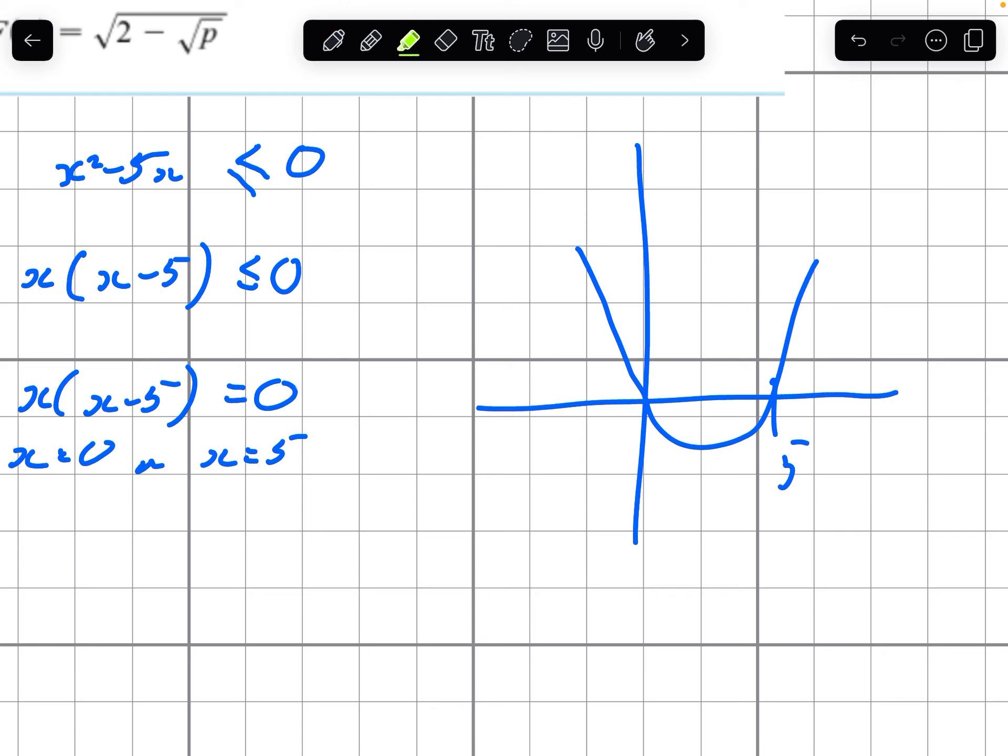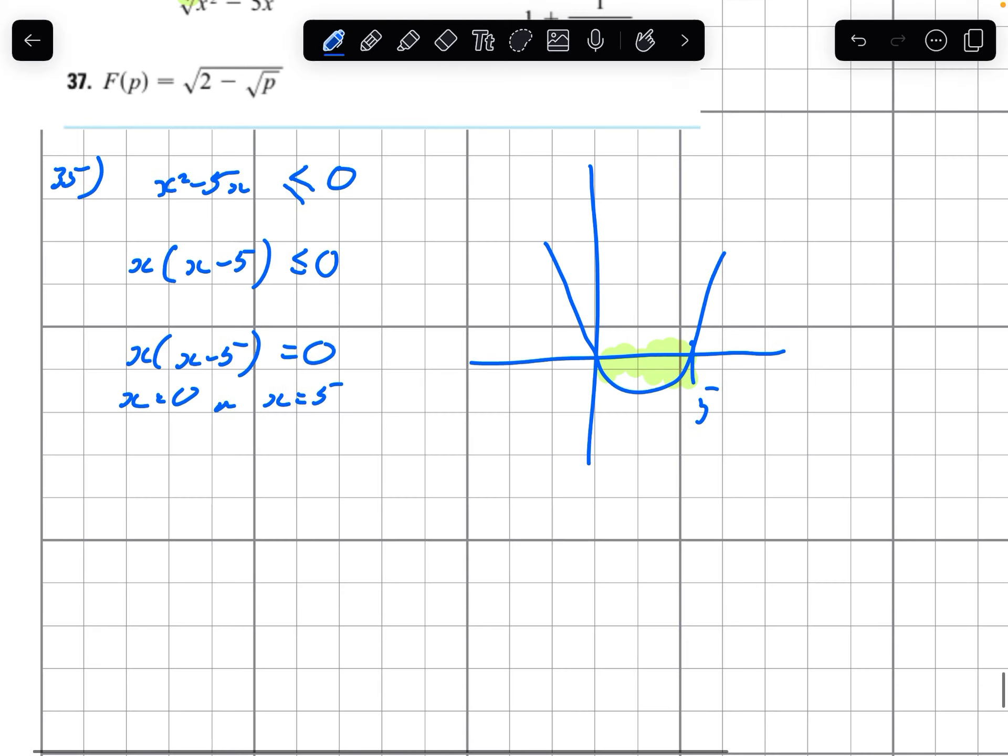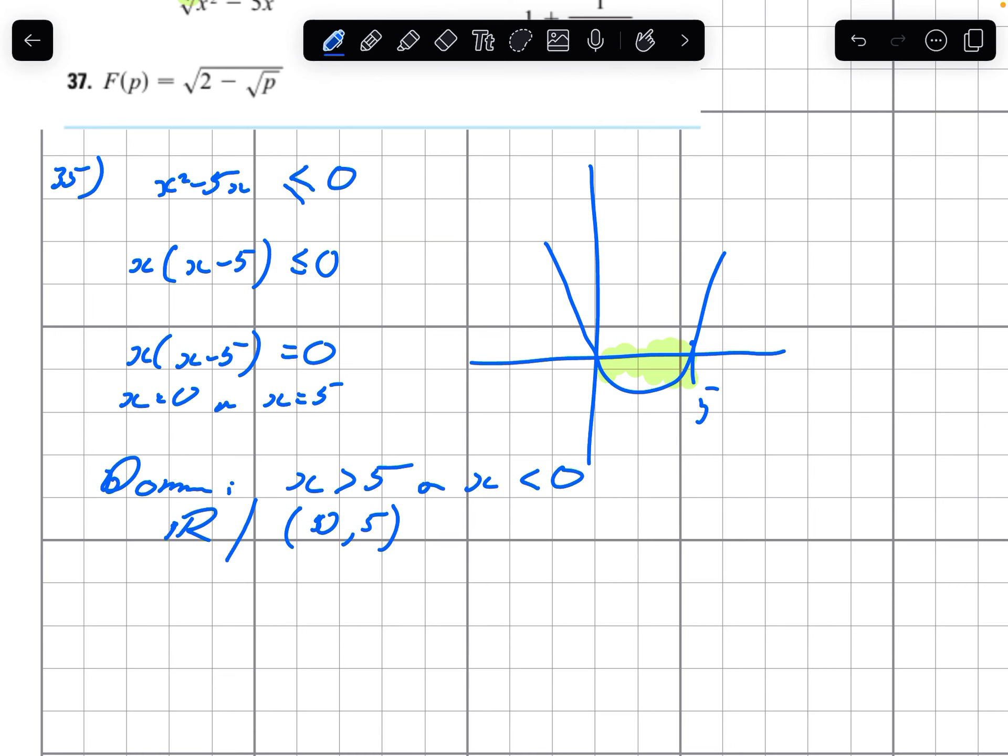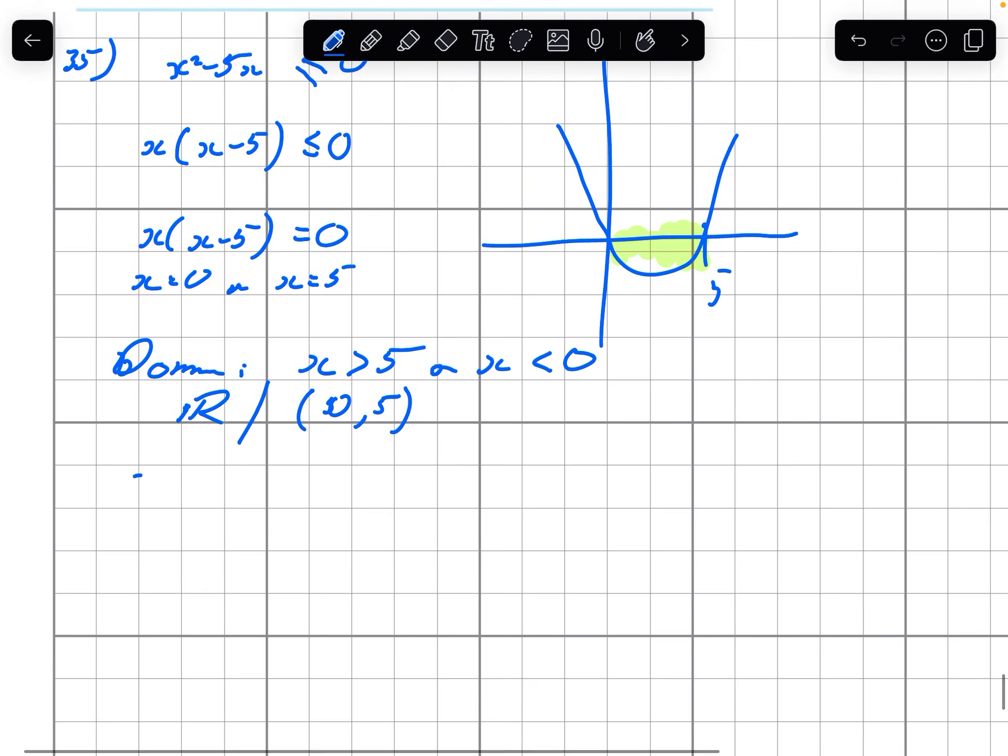So the problems occur here. And so our domain is everywhere outside of that. x greater than 5 or x less than 0. So we could write that as the reals, not including the interval from 0 to 5. Or we could write it as x in the reals, such that x is less than 0 or x is greater than 5.